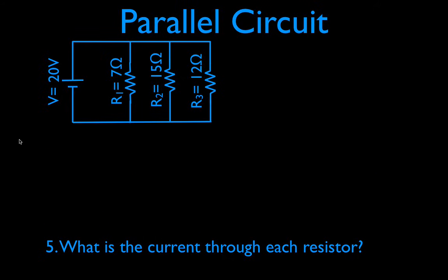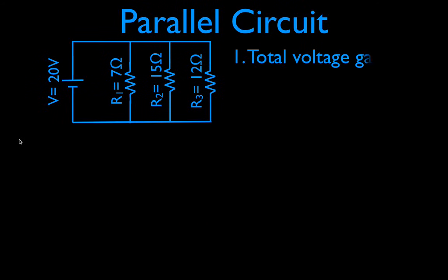We're going to start with the total voltage in the circuit. This is the voltage gain — this is the battery, the thing that causes the electrons to gain electric potential energy. There's only one of them, so it's pretty straightforward. The total voltage gain in the circuit is 20 volts, and I write down 'total' so I know that's my total voltage gain.